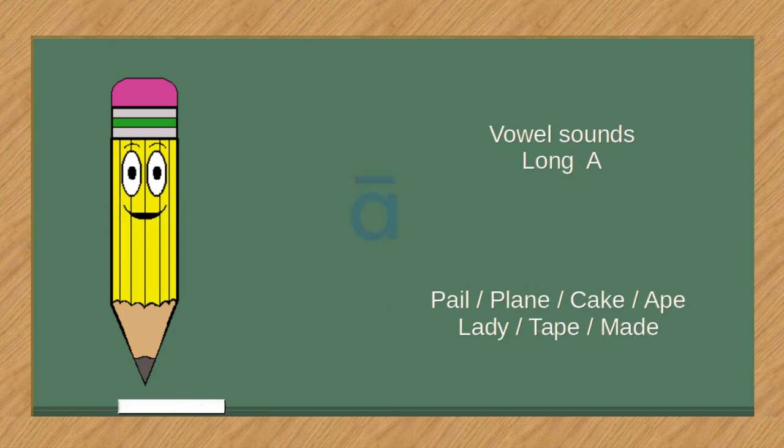Vowel sounds, long A. Pale, plain, cake, ape, lady, tape, maid.